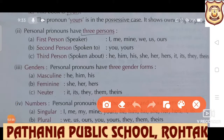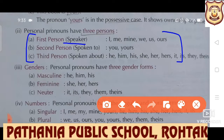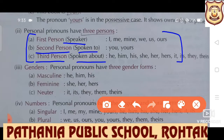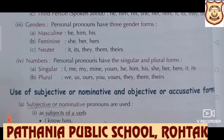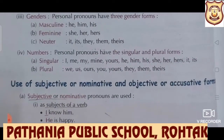In the beginning I told you that there are three persons. First person: who are the speakers. Like, I am explaining to you, so I am the speaker. Second person is 'you', to whom I am speaking. And third person is spoken about — definitely I will be speaking about someone or something, so that is the third person. Personal pronouns have three gender forms: masculine, feminine, and neuter.